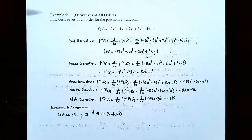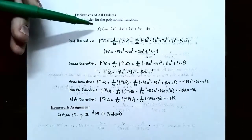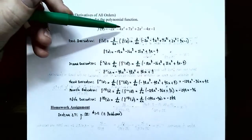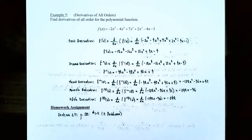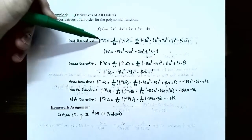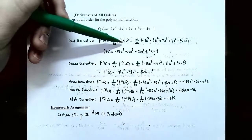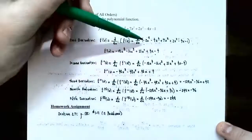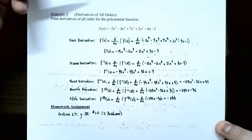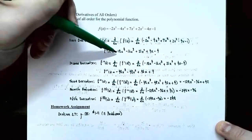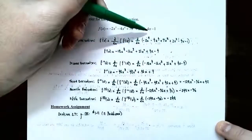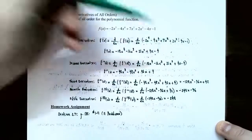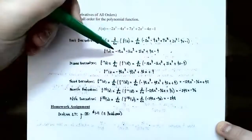To see how higher order derivatives work, let's do Example 5: derivatives of all orders. Find the derivatives of all orders for the polynomial f of x equals negative 2x to the fifth, minus 4x to the fourth, plus 7x cubed, plus 2x squared, minus 4x, minus 1. This is a degree 5 polynomial. The first derivative, f prime of x, is found using the power rule, sum/difference rule, and constant multiple rule: negative 10x to the fourth, minus 16x cubed, plus 21x squared, minus 4.